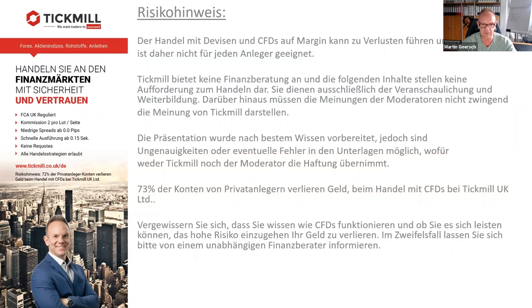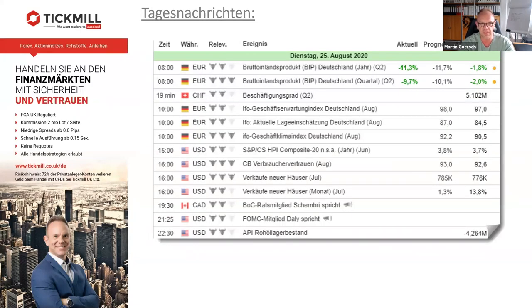Bevor wir heute in die Charts reingehen, werfen wir wie immer einen Blick auf die News des Tages. Da haben wir also heute schon gehabt um 8 Uhr das Bruttoinlandsprodukt in Deutschland. Ein bisschen besser als erwartet. Es stehen zwar Minuszeichen davor, also es ist schlechter geworden zum Vorquartal, aber etwas besser als erwartet. Es waren minus 11,7 Prozent fürs Jahr erwartet, es sind minus 11,3 geworden. Es sind minus 10,1 fürs Quartal erwartet worden, es sind 9,7 geworden, also etwas besser.